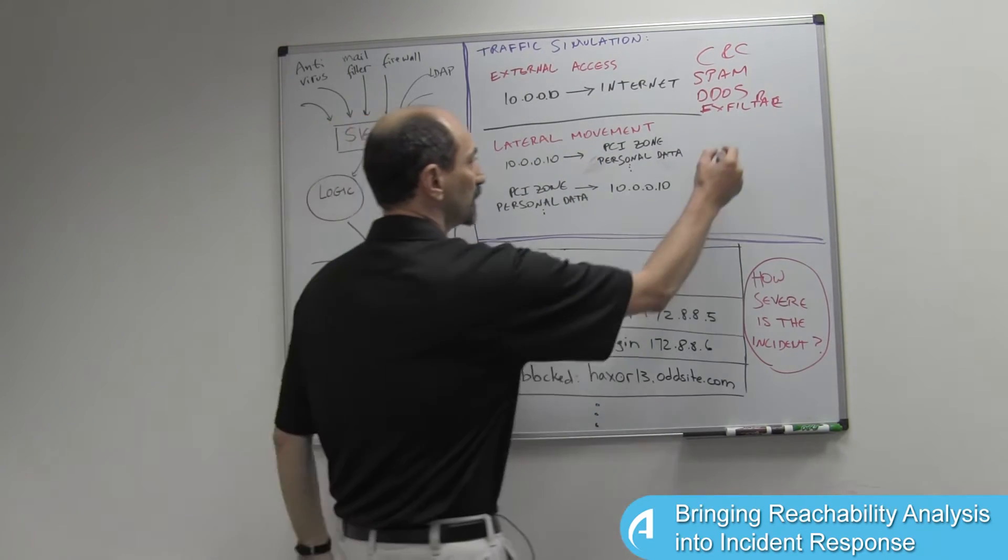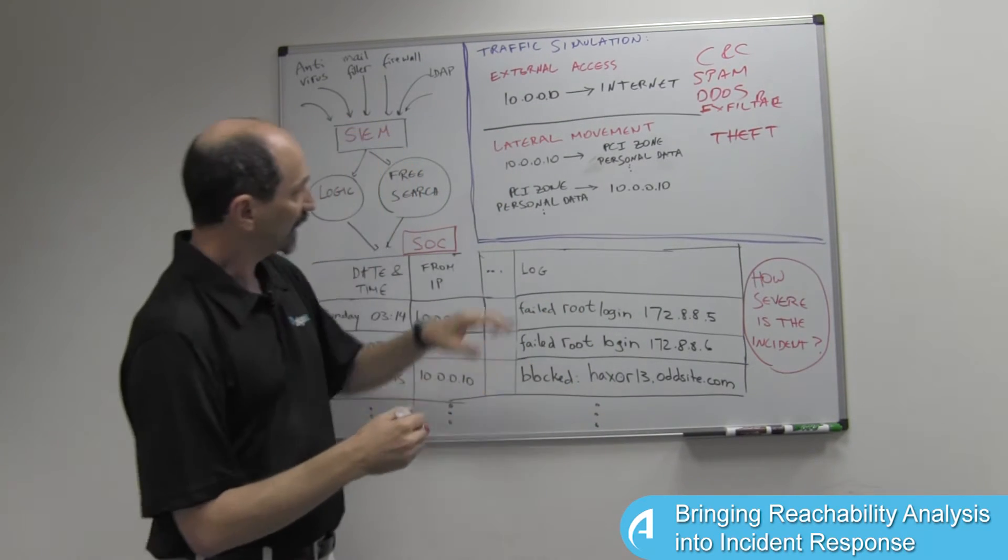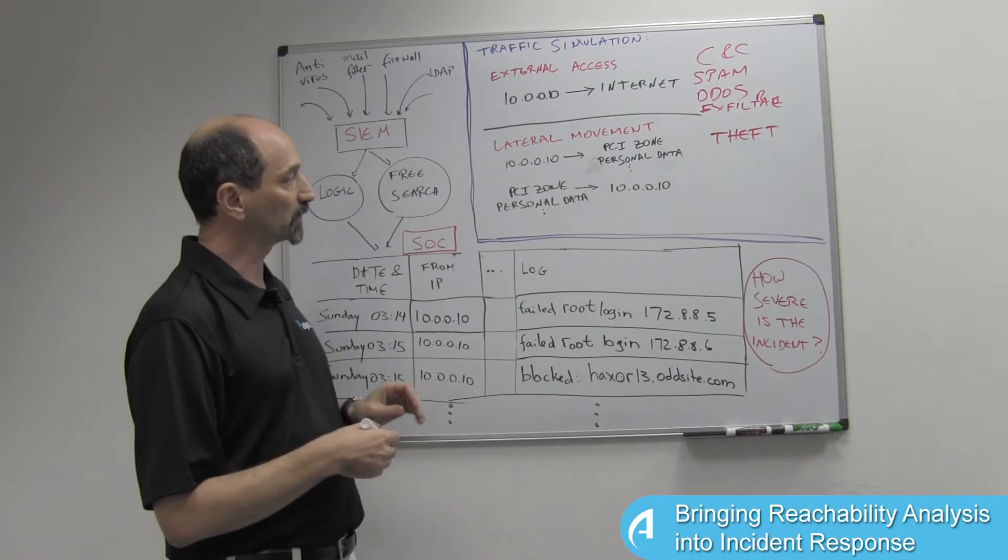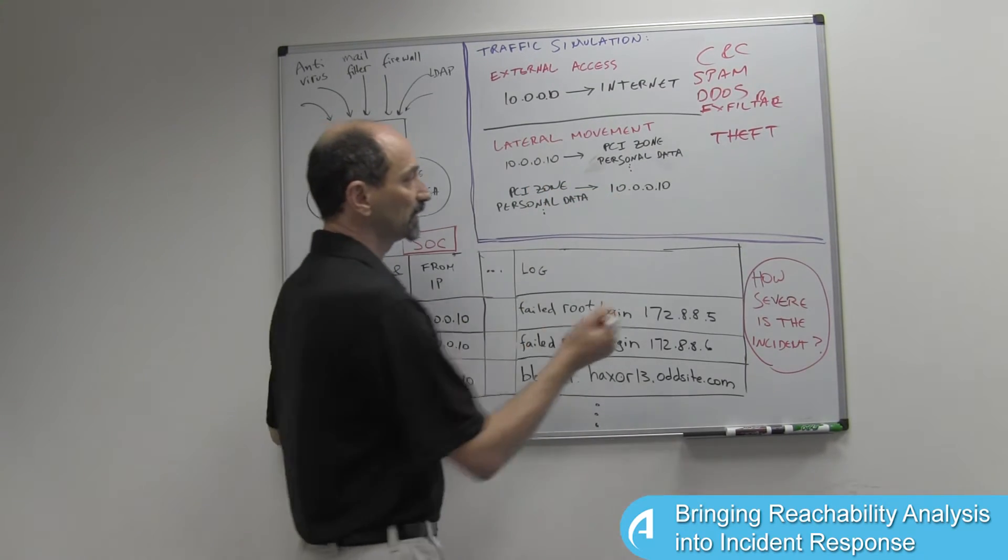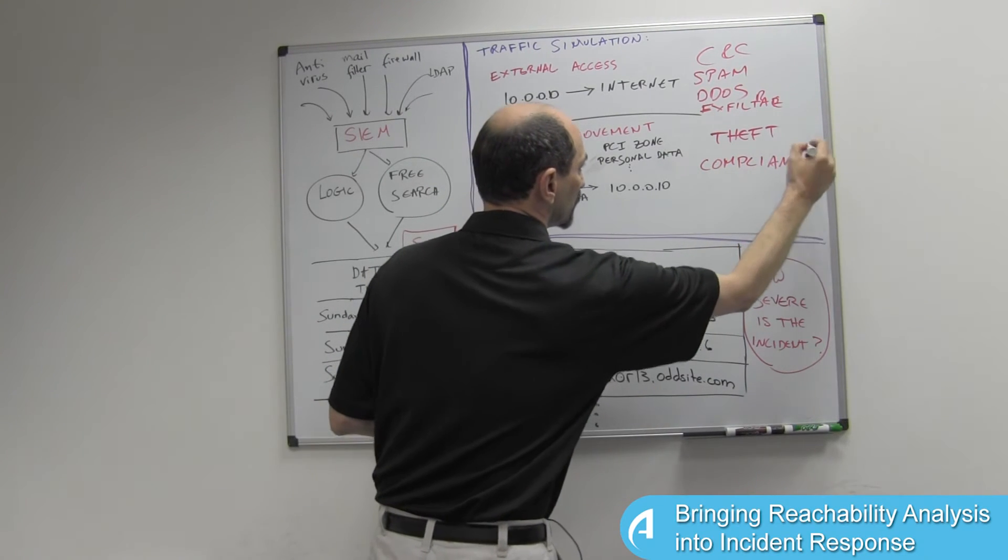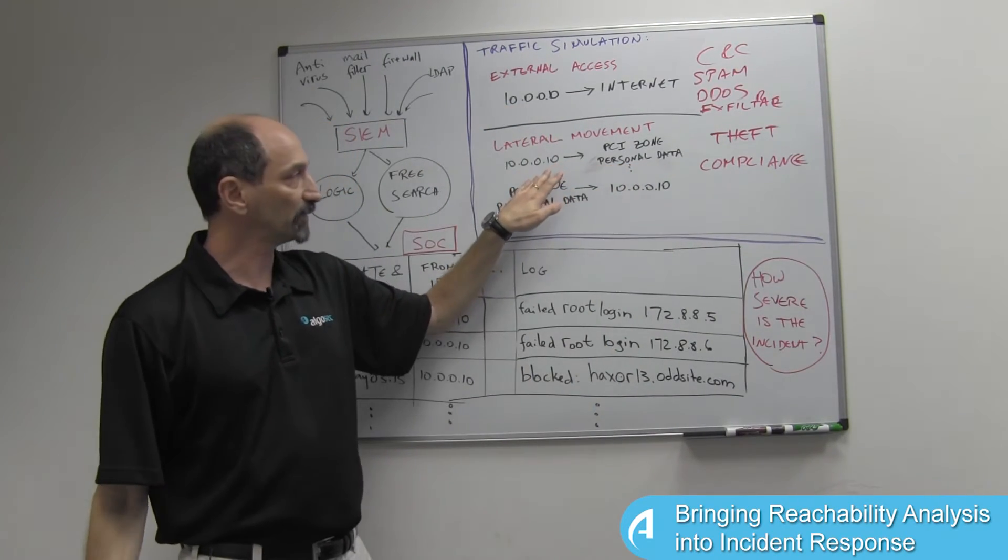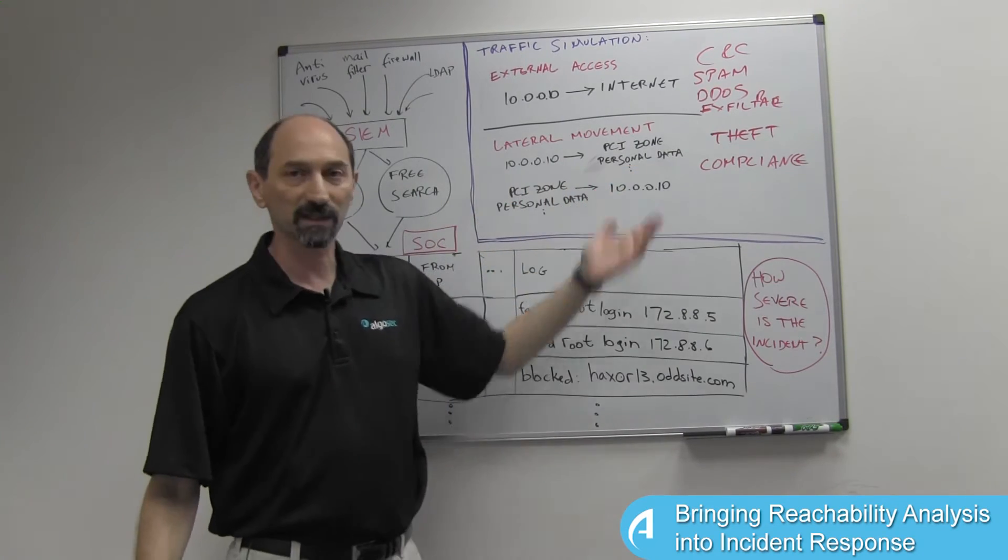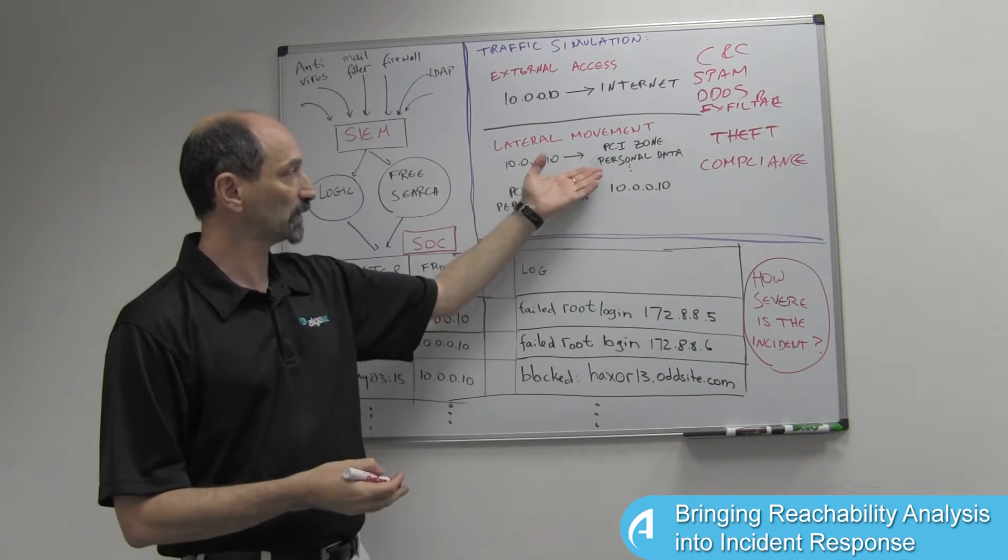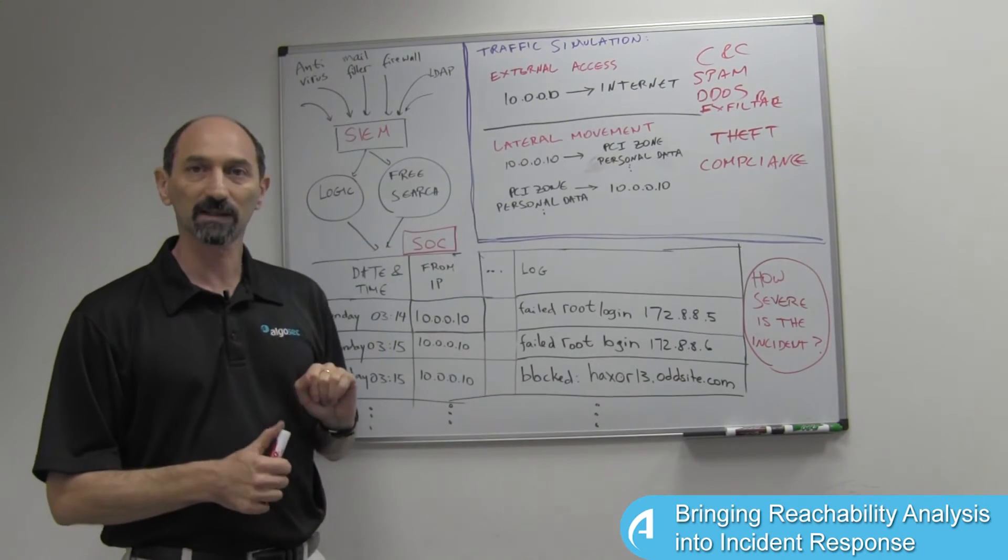Likewise, if it can access servers that contain personally identifiable information, then again, that is sensitive and having access to such information could lead to compliance violations. We need to report if a server that is infected has access to systems that store account numbers and social security numbers, other pieces of personal data. We would have to report to the authorities that this incident is affecting such systems. So again, this elevates the severity of the particular threat.